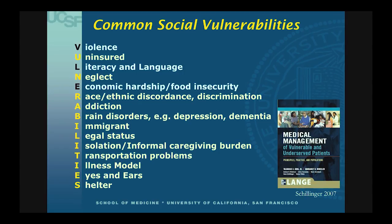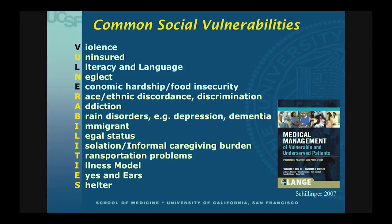Here's the mnemonic: VULNERABILITIES. Violence — in the home, in the community; uninsured; literacy and language; neglect — elder neglect, self-neglect; economic hardship; food insecurity — and more. These are by far the most common social vulnerabilities patients bring to the encounter. They don't come with a sign saying what they have, and sometimes we make false assumptions — 'this guy must be homeless' or 'this guy must be a drug abuser' — and we're often wrong. The biggest mistake is if we don't consider these factors as contributing to either the onset of disease or the challenges the person has managing it.